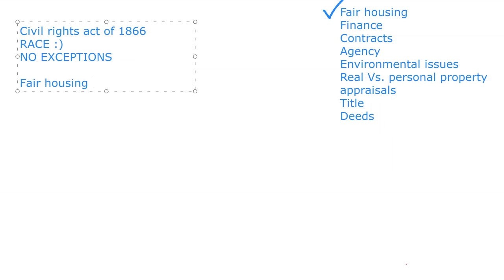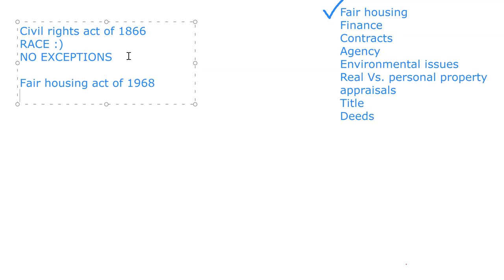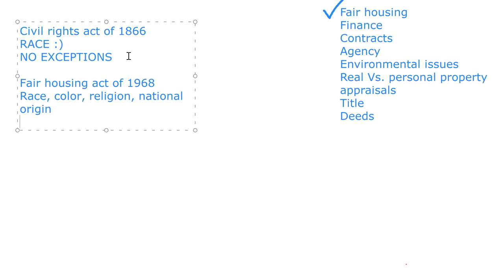The next one is the Fair Housing Act of 1968. This protects race, color, religion, national origin, and ancestry. So you cannot discriminate based on race, color, religion, national origin, or ancestry.